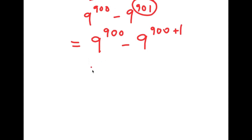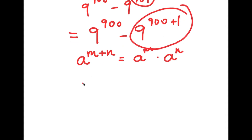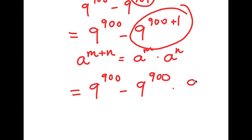There is an important exponential property to know: if I have something in the form a to the power of m plus n, this is equal to a to the power of m times a to the power of n. So in this case, 9 to the power of 900 plus 1 can be rewritten as 9 to the power of 900 times 9 to the power of 1.